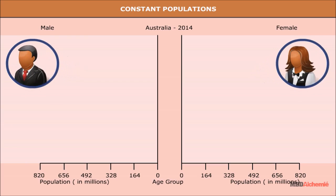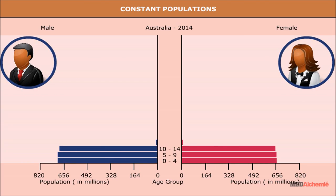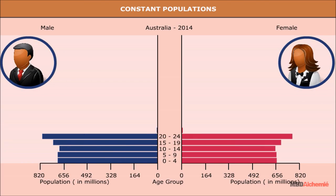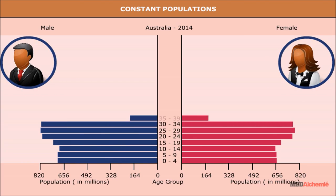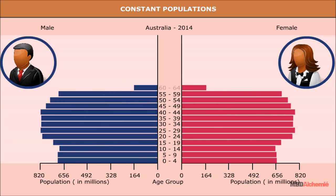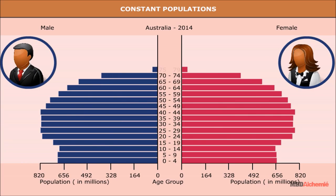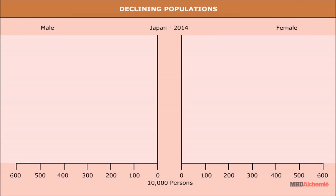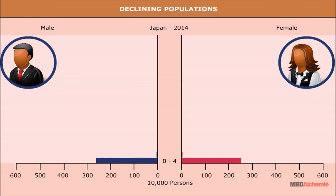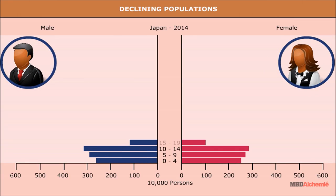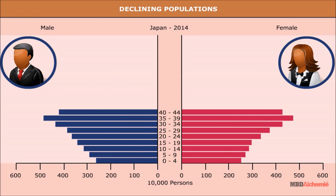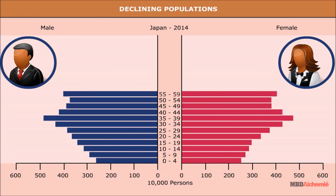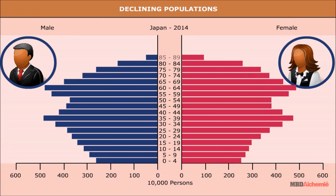Constant Population: Australia's age-sex pyramid is bell-shaped and tapering to the top, as the birth and death rates are almost equal. Declining Populations: The pyramid for Japan has a narrow base and a tapered top, showing low birth and death rates.